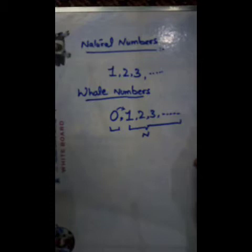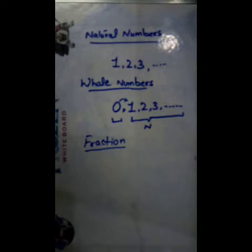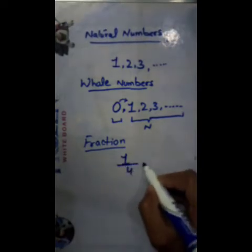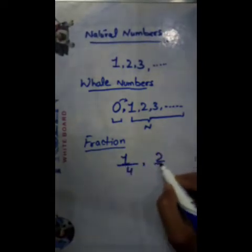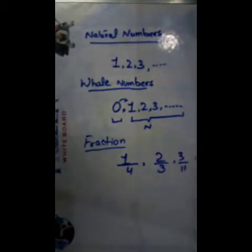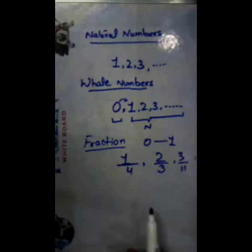Now students, let's know about Fractions. A part of a whole is called a Fraction. A fraction has a value between 0 and 1. For example, if we write 1 by 4, similarly 2 by 3, 3 by 11 — this is your Fraction form because it lies between 0 and 1. So it is your Fraction.